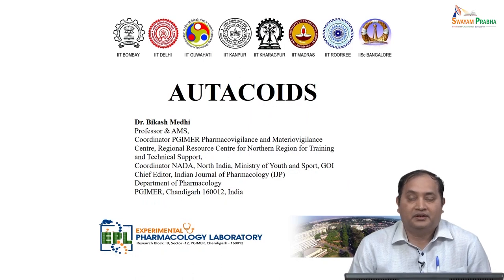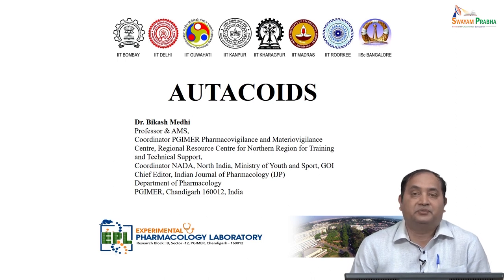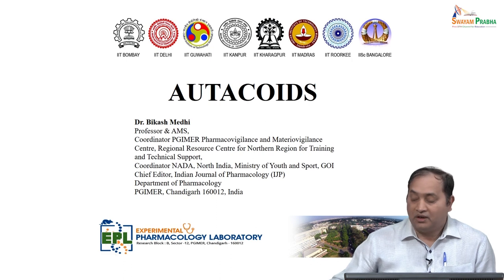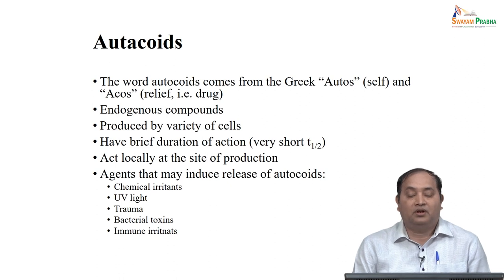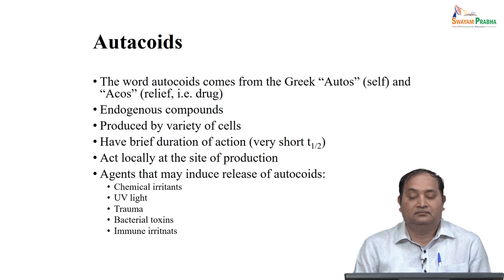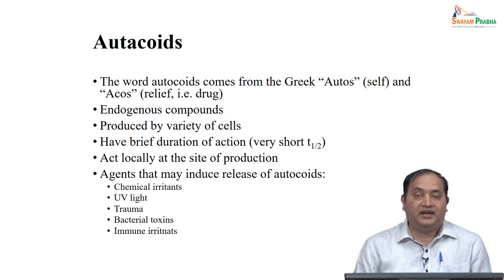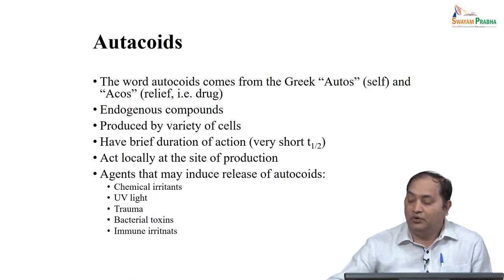We can see several endogenous substances and when we discuss them in other sectors we can see that there are a lot of pharmacological actions with these compounds. When you call it an autocoid, what do you understand by autocoids? The word autocoid is coming from the Greek word — 'autos' means self and 'akos' means relief, or in terms of when you give the drug it provides relief. This is an endogenous compound and it is released following various stimuli and is produced by a variety of cells.